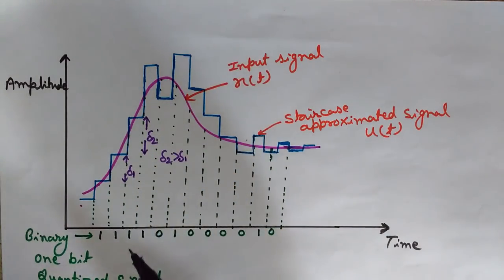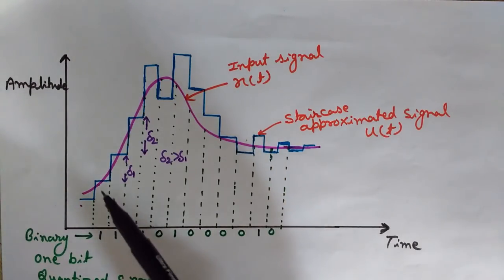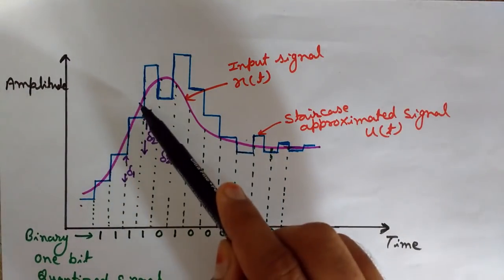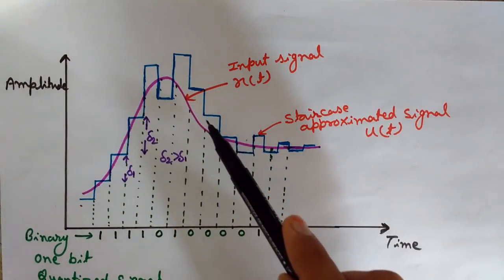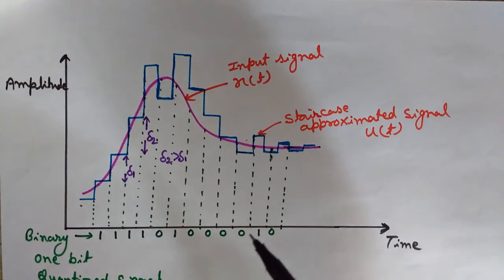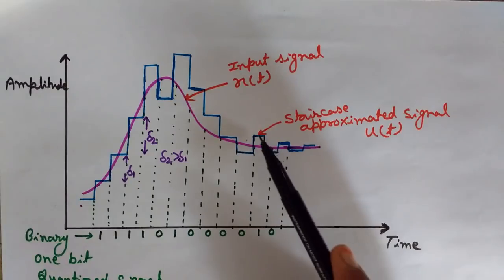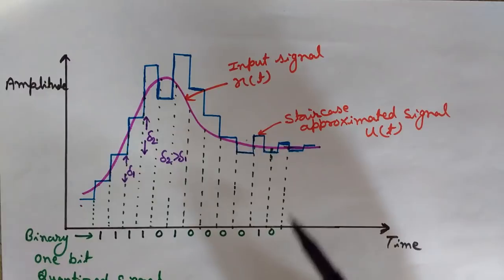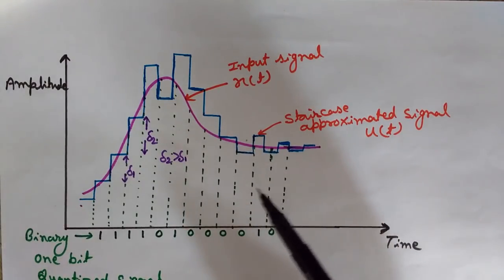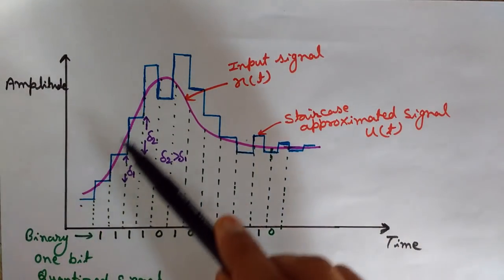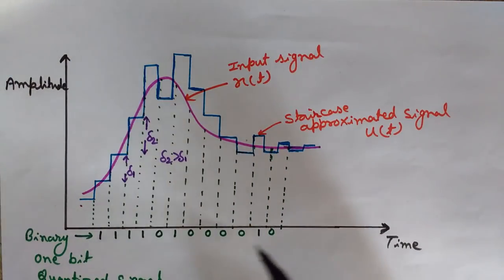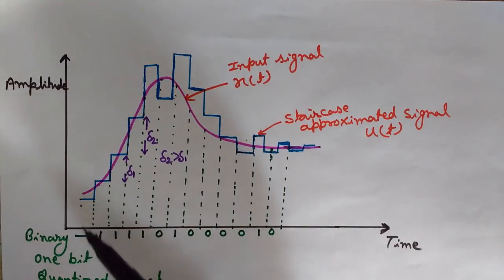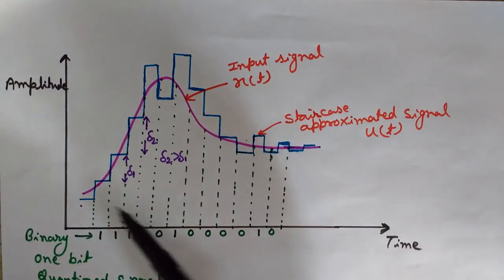Whenever we increase the step size we transmit 1, and when we decrease the step size we transmit 0. So in the rising part we are transmitting 1, and when it starts decreasing we transmit 0. In this way we are converting this analog signal into the digital output — this is just the approximation of the analog signal in pink.